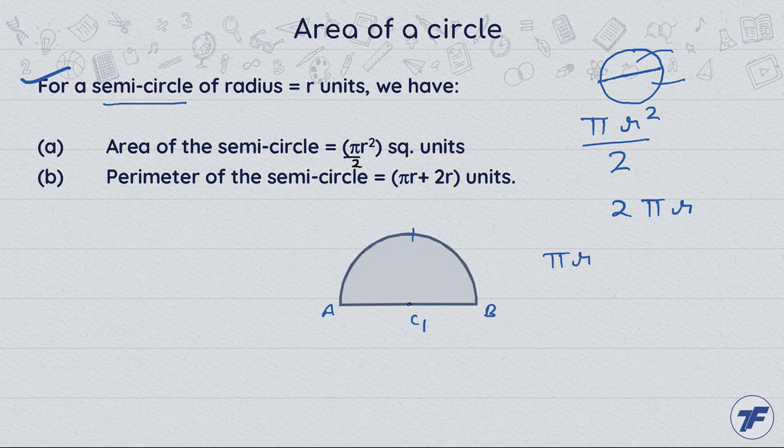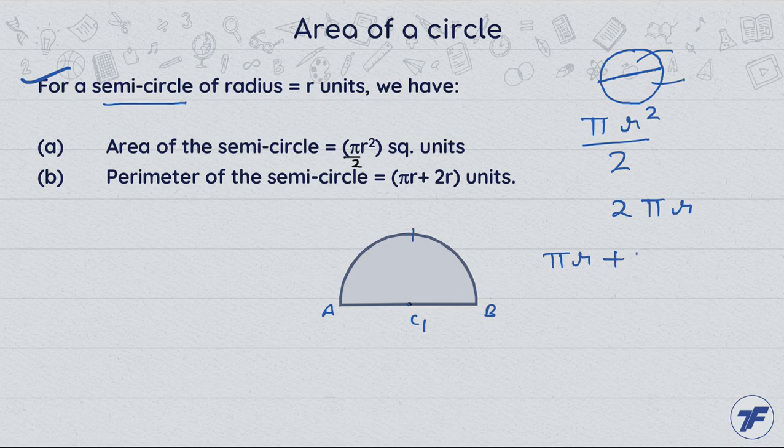Now we have the chord that divides the circle into two equal parts, and that chord passes through the center. Any chord passing through the center becomes the diameter, which is two times the radius.